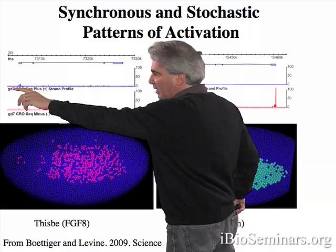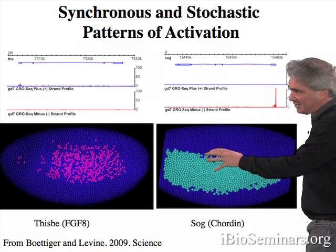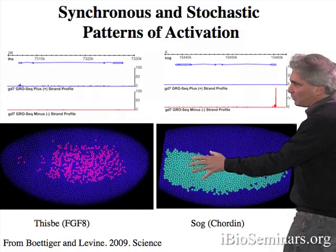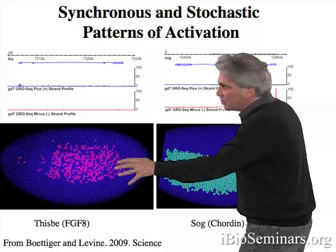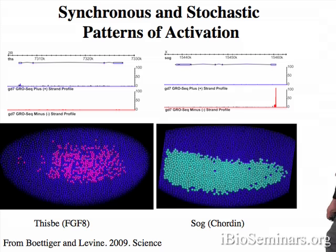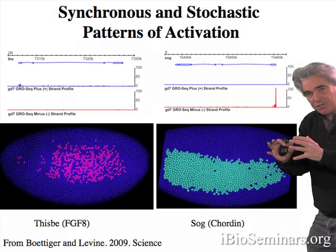In the case of SOG, which contains the paused polymerase, within a few minutes of the first detection of nascent transcripts, over 90% of the nuclei that will eventually express the gene show transcription — a very synchronous pattern of gene activation. In contrast, in the case of FISB, which lacks paused polymerase, only about 50% of the nuclei show nascent transcripts within the first several minutes of gene activation, and it'll take another 20 to 30 minutes before this pattern fills out and becomes uniform. So paused polymerase fosters rapid and synchronous patterns of gene activation.